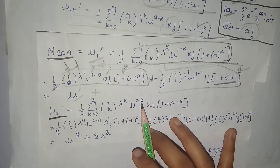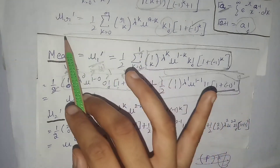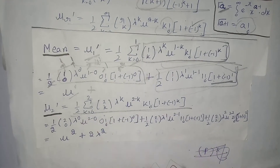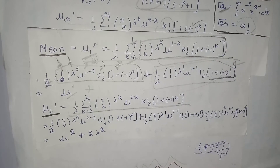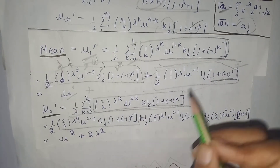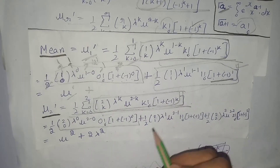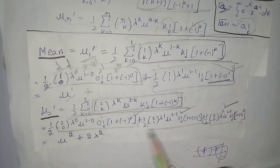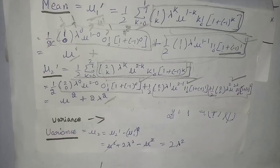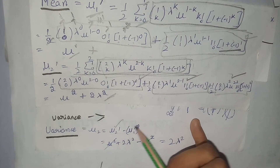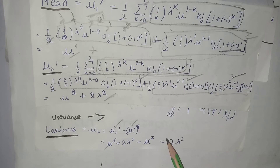Next, we calculate the second moment about origin, μ₂′, by setting r = 2 in the relation. Expanding the summation for k = 0, 1, and 2, and solving these terms gives us the value of μ₂′. The variance equals μ₂′ − (μ₁′)². Substituting these values, the overall variance of the two-parameter Laplace distribution is 2λ².